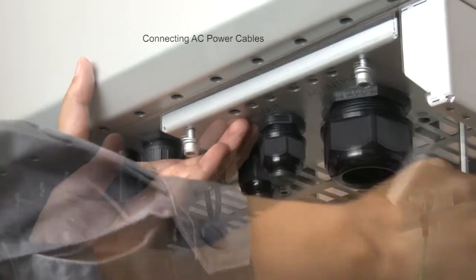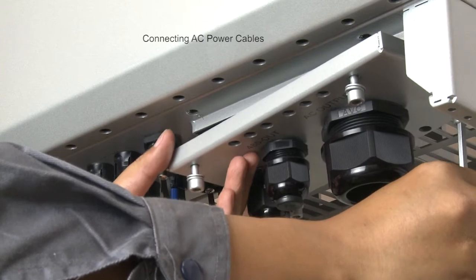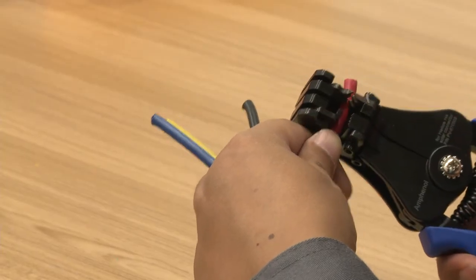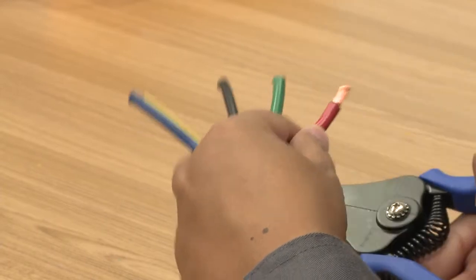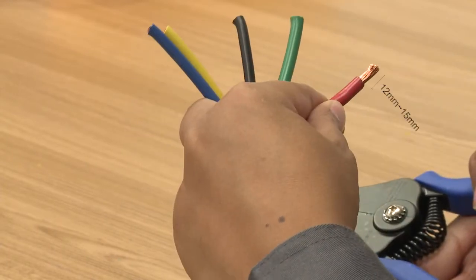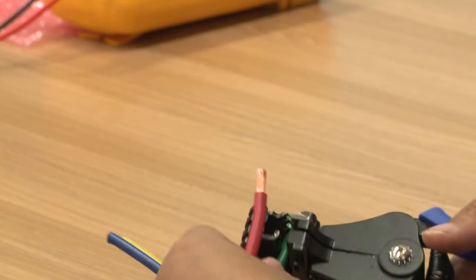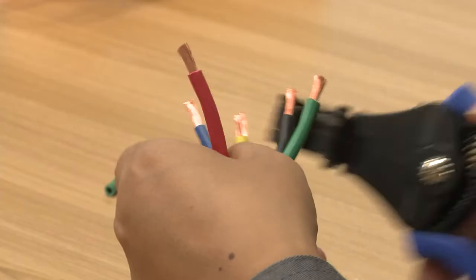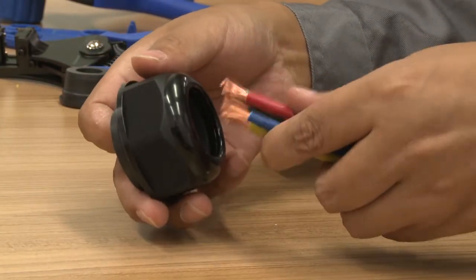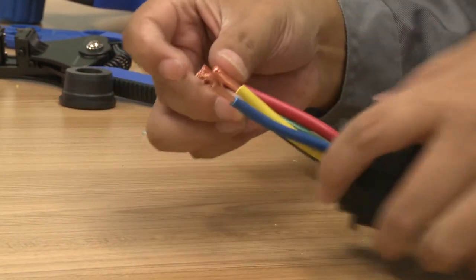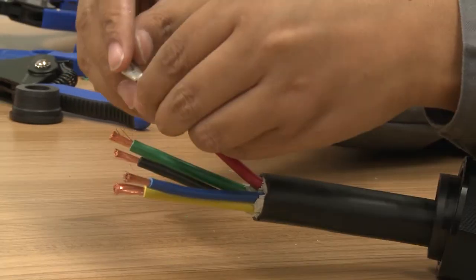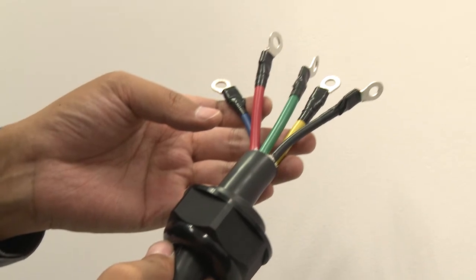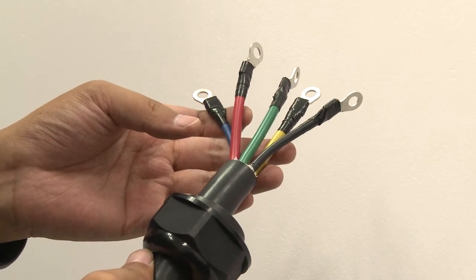Remove the AC cable board using the socket wrench. Remove an appropriate length of the jacket and insulation layer from the AC output cable, and then remove insulation from each of the inner wires using a wire stripper. Pass the exposed wire cores through the waterproof connector and crimp them to the OT terminals using the crimping pliers. Wrap the crimped wire areas with heat shrink tubing.